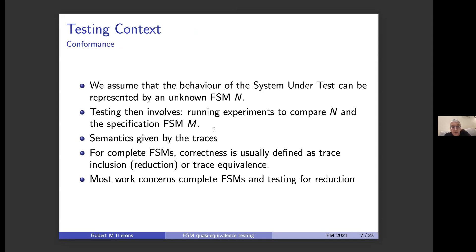So we do the normal thing in finite state machine testing, which is that we make an assumption about the system under test. We assume that it's behaving like some unknown finite state machine N. Then testing is about comparing two finite state machines via observations by running experiments. The semantics is traces only. If we're only concerned with complete finite state machines, ones where for every state and input the behavior is defined, then there's normally just two forms of correctness: either trace inclusion, which people call reduction as well, or trace equivalence.